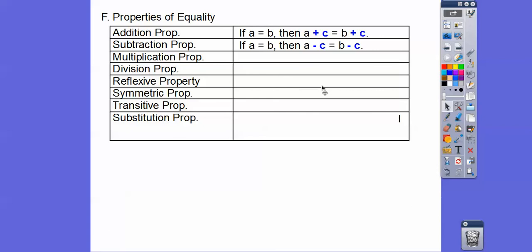The multiplication property: if A equals B, then A times C equals B times C. Remember, whatever you do to one side of the equals, you do to the other side. The division property: if A equals B, and you can't divide by zero — so C can't be zero — then A divided by C equals B divided by C.